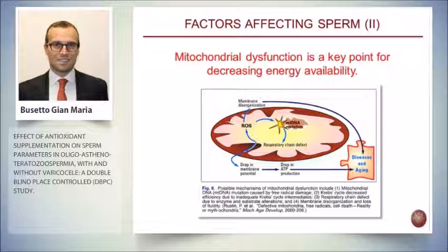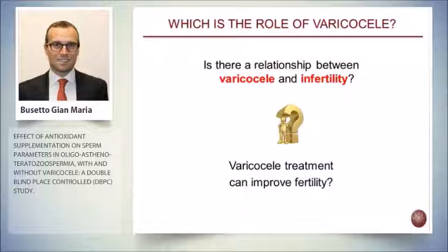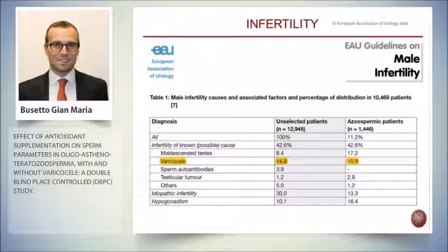ROS can act on the mitochondrial DNA, on the mitochondrial membrane, and even on the membrane potential. All of these represent causes of mitochondrial damage, which is fundamental for the energy metabolism of sperm. Another important topic I would like to introduce is varicocele, because varicocele is really important and strongly related to infertility. So the question I would like to ask is: is there any relation between varicocele and infertility?